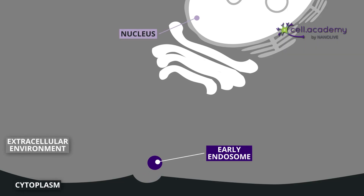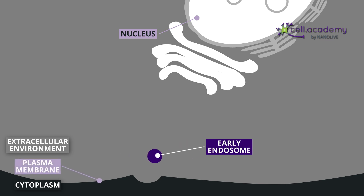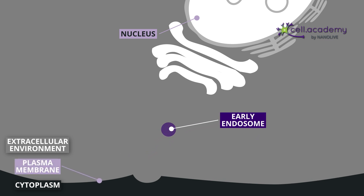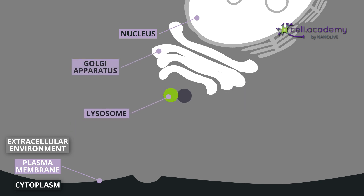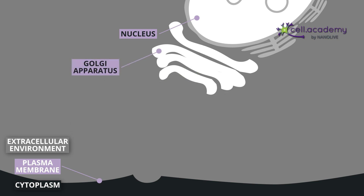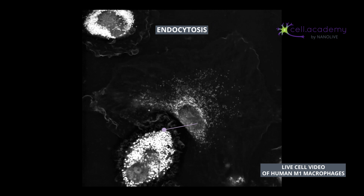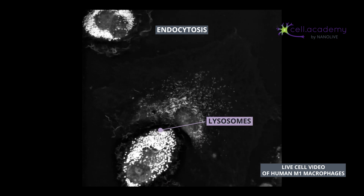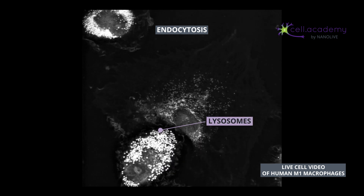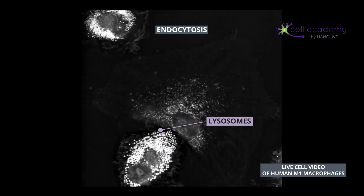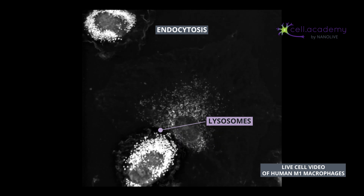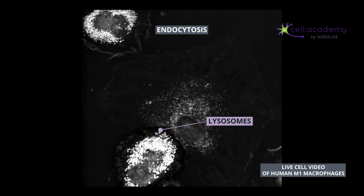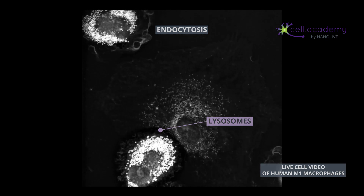Early endosomes can either be recycled back to the membrane or mature into late endosomes, which can be found close to the Golgi apparatus, where they fuse with lysosomes. Finally, lysosomes are organelles that carry enzymes to degrade and help digest the uptaken material. Once digested, the content is further distributed to its final destination.